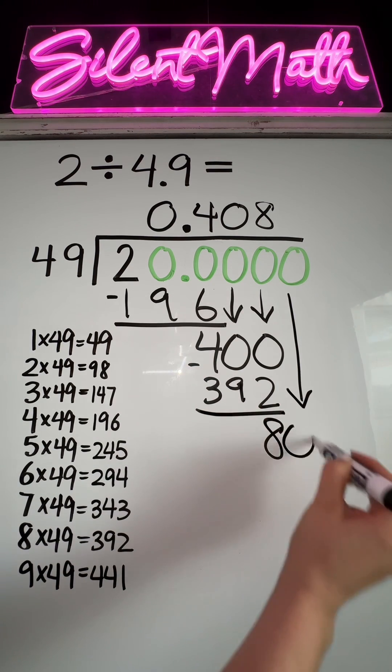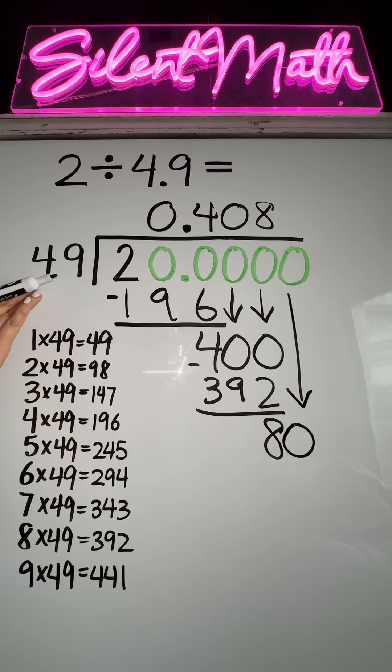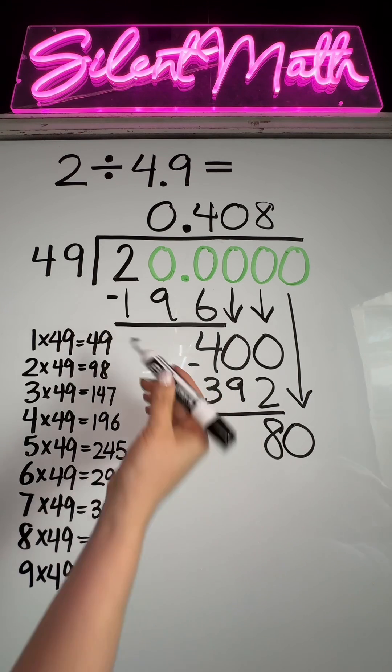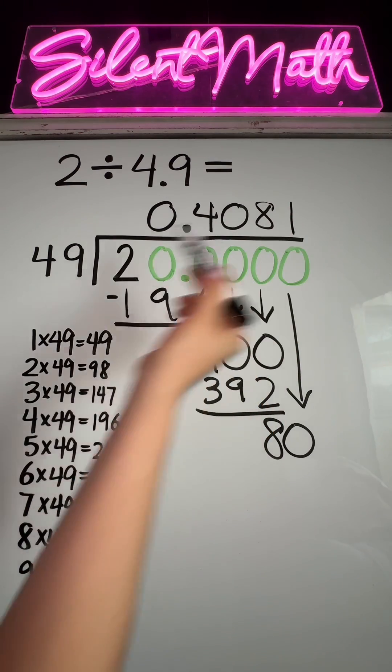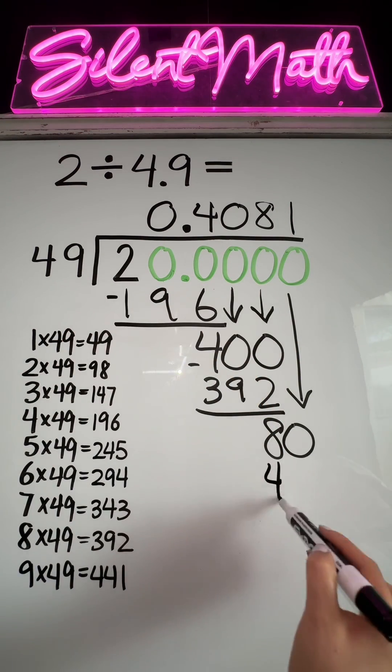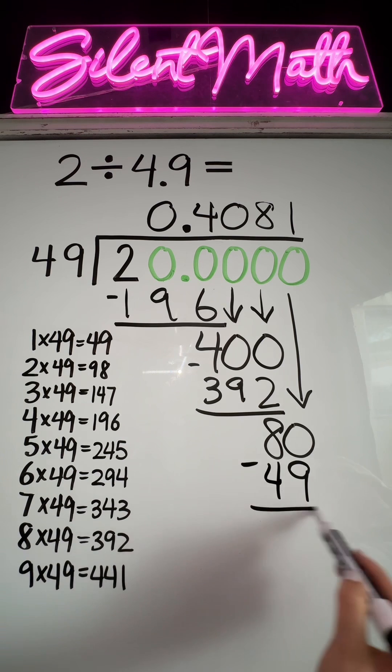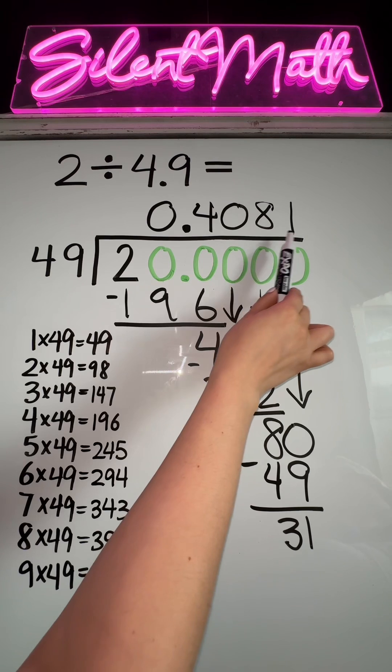Bring down the next digit to repeat the process. How many groups of 49 can go into 80? We're going to go with one group. One group of 49 is 49. So this is just going to keep going on forever and ever, but what's best to do is maybe look at what you have and round.